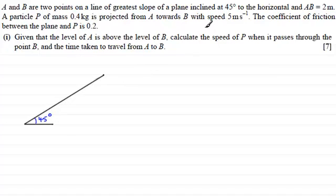Now we're told that the particle started at point A, it was projected from A towards B, and A is above the level of B. So if we have A here and we have B down here, then originally the particle was up here, and it was projected down the plane with a speed of 5 meters per second. And let's just put the particle in a general position as it comes down through here. Let's say we put it here. There's our general particle.